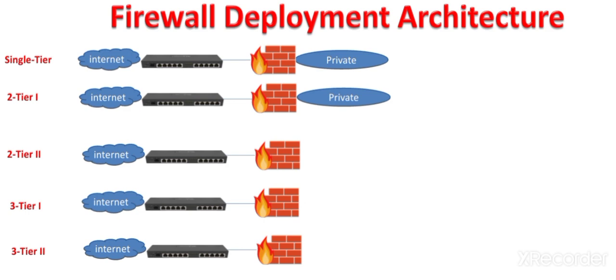In two-tier architecture, we again have a private network, but in addition to that we have a demilitarized zone. In the demilitarized zone, we have deployed the public-facing servers — for example, your web server, your proxy server, or maybe your DNS or domain name server. This DMZ, or demilitarized zone, provides an additional layer of protection to the private network.